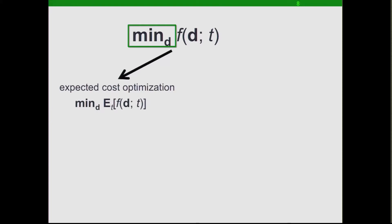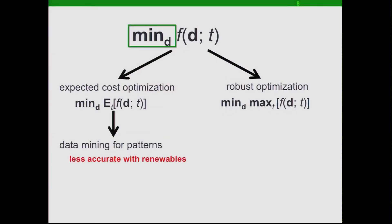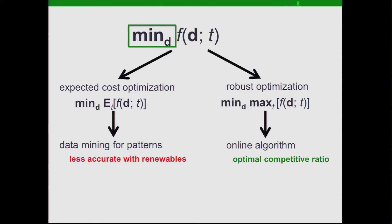One natural way to solve the problem is to minimize the expected cost. To do that, we obtained more than 20 years of data from the utility company and did data mining, showing there is a strong weekly, daily, and seasonal pattern in the coincident peak hour. By doing this, we can minimize the expected cost. However, looking into the future, with more renewable integration, prediction and pattern accuracy will decrease, which motivates us to study whether we can provide a worst-case guarantee via robust optimization. The particular structure of this problem helps us design an online algorithm with an optimal competitive ratio as a performance evaluation, and this can be extended to different scenarios.